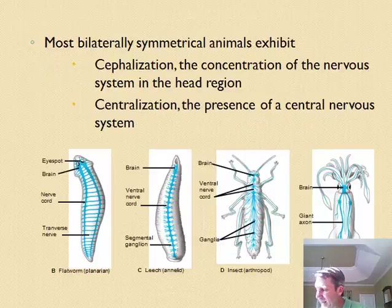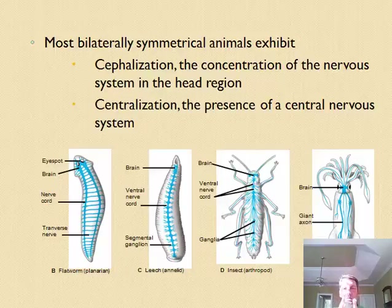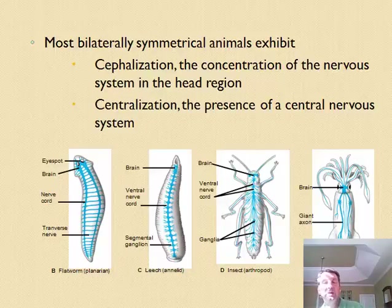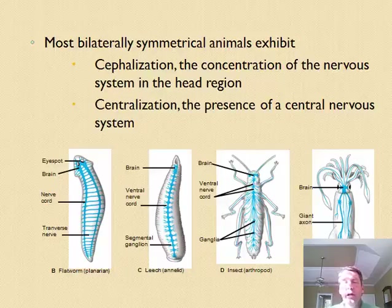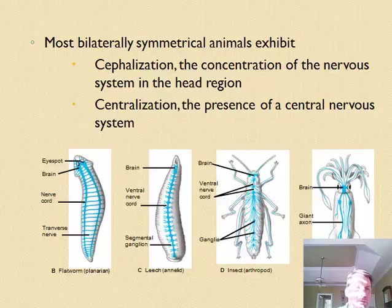In more complex animals, we have a bilateral nervous system — meaning there's a right and left side. The left side of the brain controls the right side of the body, and vice versa. More complex animals also typically show cephalization, where there's a concentration of nervous structures at one end — the head. In humans, our eyes, ears, nose, and brain are all located in that head region.